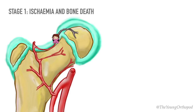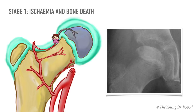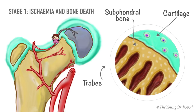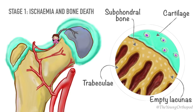Initially, it still looks normal on the plain x-ray but stops enlarging, and soon appears dense and smaller than the uninvolved side. The cartilaginous part of the femoral head, being nourished by synovial fluid, remains viable and becomes thicker than normal. This is seen as increased joint space on the radiograph. There may also be thickening and edema of the synovium and capsule.